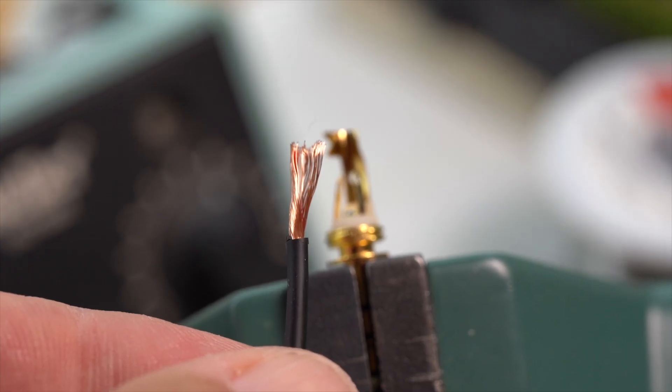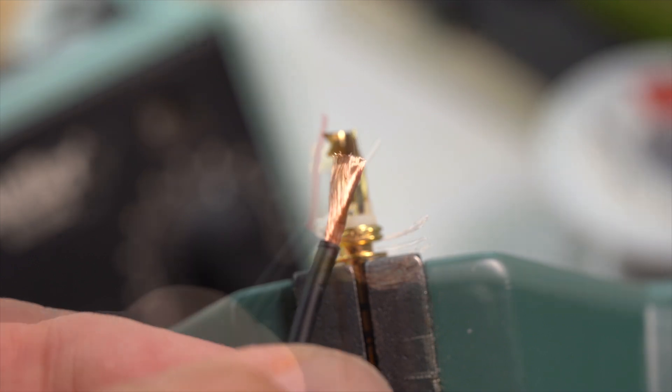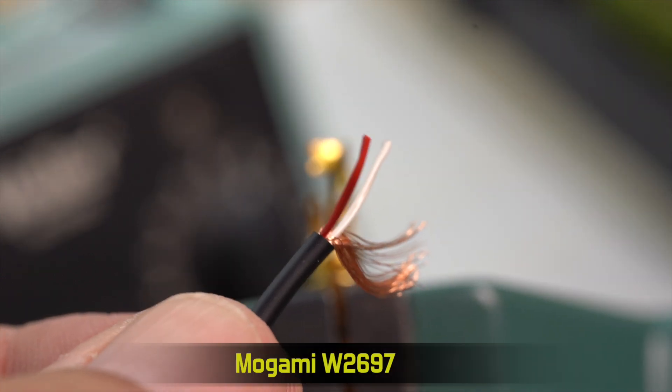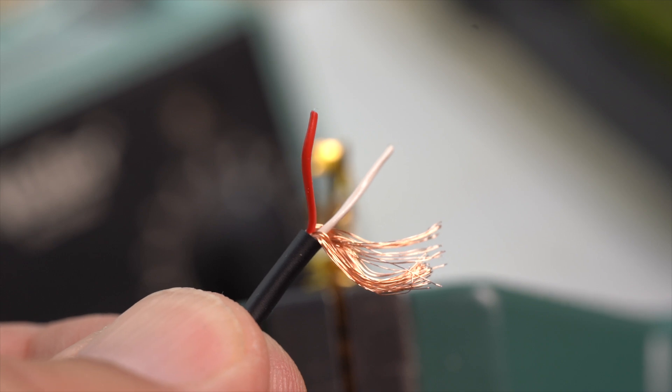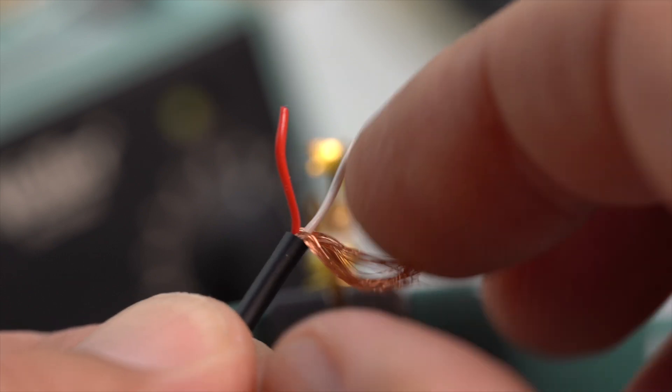We are using shielded wire to minimize electrical noise and hum. I use Mogami W2697. It is two-conductor shielded, thin, flexible, and pretty easy to work with.